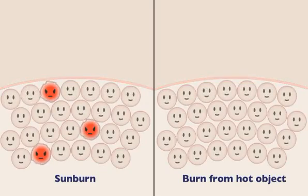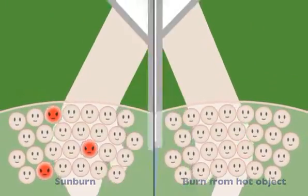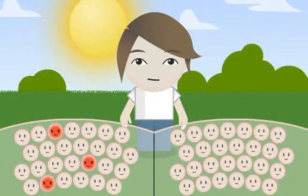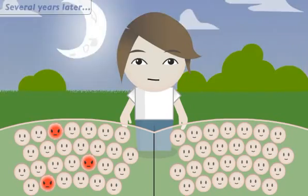causing blistering and peeling. With a sunburn, even though your skin may eventually look healed, some cells that contain mutated DNA can be left behind, because your body's repair mechanisms aren't perfect.